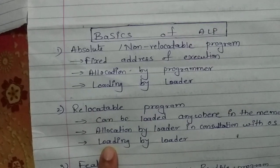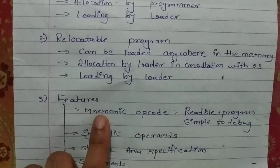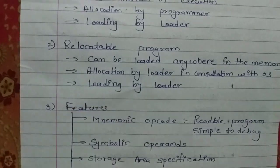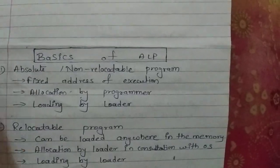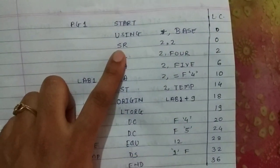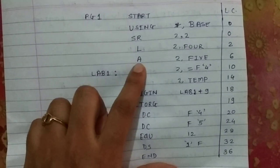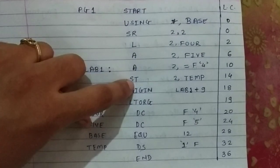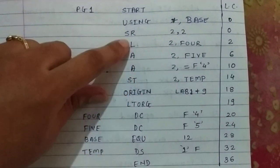The next topic is the features of assembly level programs. There are four features. The first is mnemonic opcode specification. As seen in the last video, operations like register-register subtraction, loading, addition, or storing are statements which tell the assembler what is to be done.